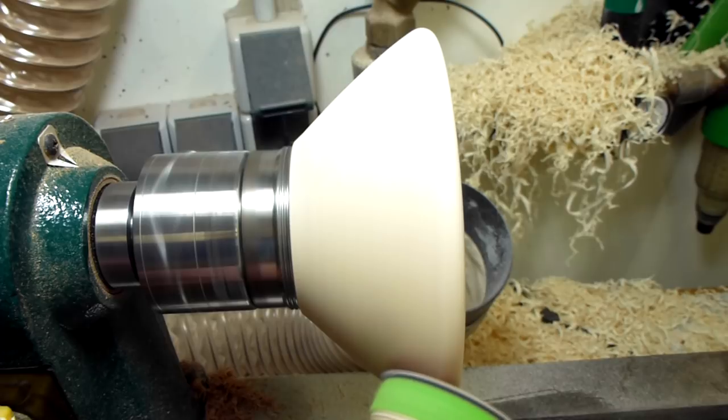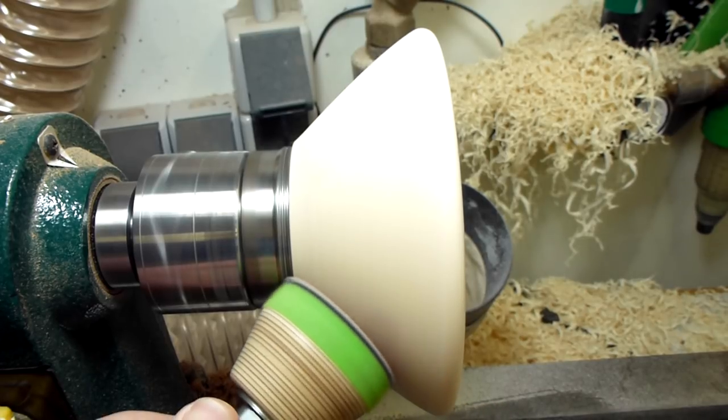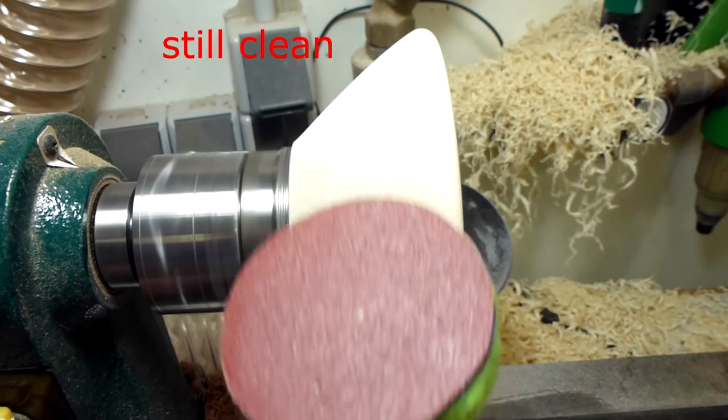That's especially noticeable in the very high grits. A 1000 grit paper clogs up very very fast. But not with this sander.